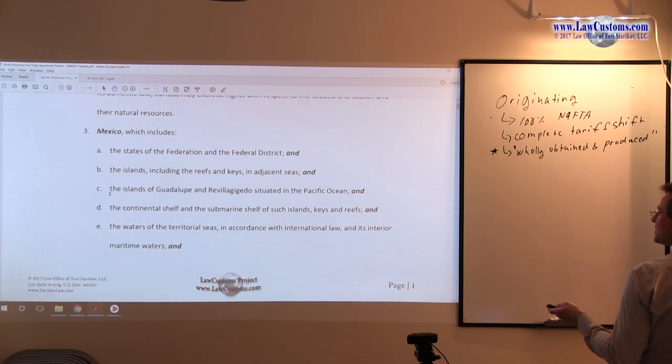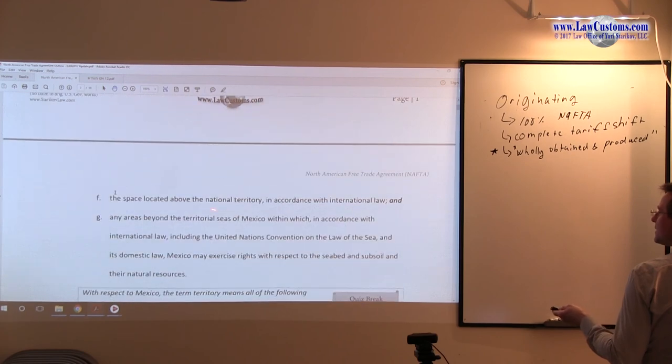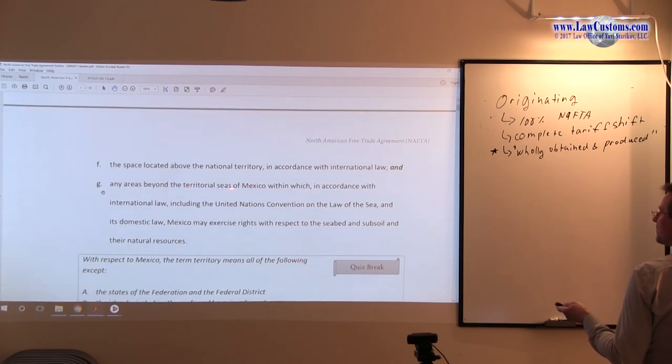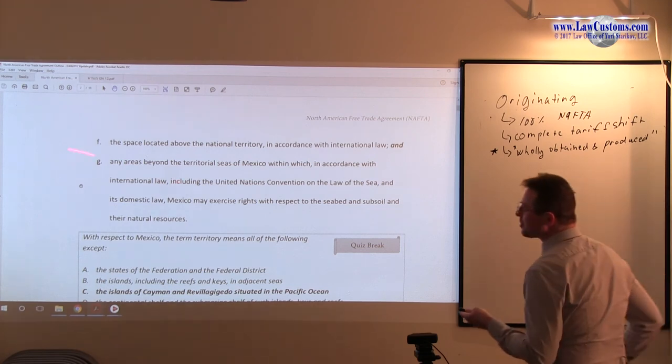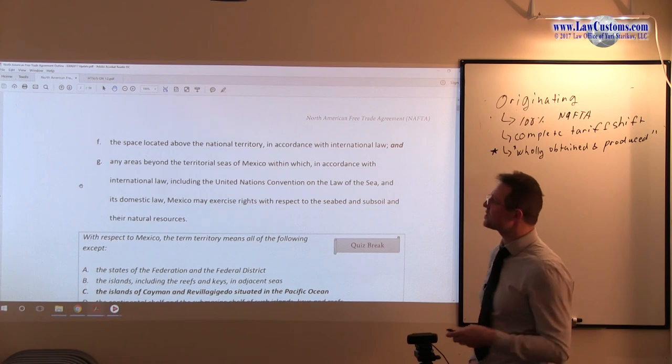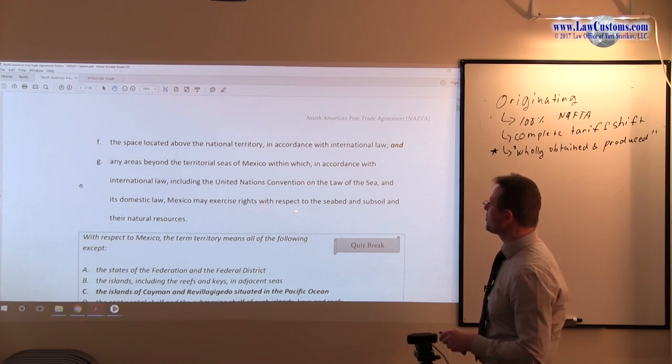Remember, we discussed G here. The territory of Mexico includes any areas beyond the territorial seas of Mexico, within which, in accordance with international law, including the United Nations Convention on the Law of the Sea, and its domestic law, Mexico may exercise their rights with respect to seabed and subsoil of their natural resources. In other words...